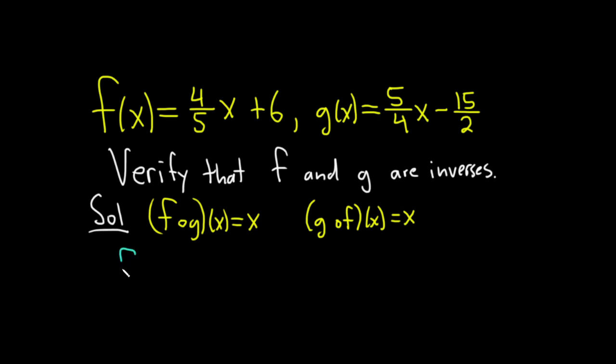Let's start with this one here. So f∘g of x. So this is basically the same thing as f of g of x. And what this says is you just replace the g with what it is. So this is equal to f of 5 fourths x minus 15 over 2.